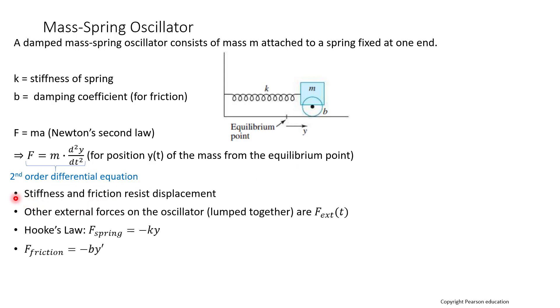So just some other information for us. Stiffness and friction resist displacement. Other external forces on the oscillator are going to be lumped together and just denoted F_ext. Hooke's law says that the force of the spring is equal to some negative proportion times the displacement. So in our case, k is our stiffness of our spring. And then the force due to friction is negative the damping coefficient times the rate of change of the spring. So it's the first derivative there.